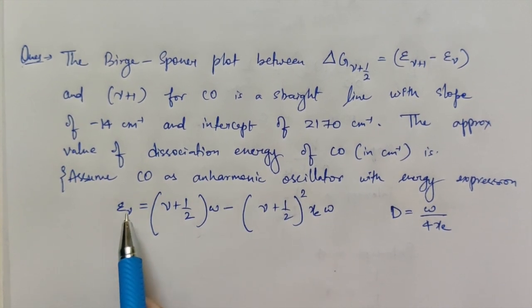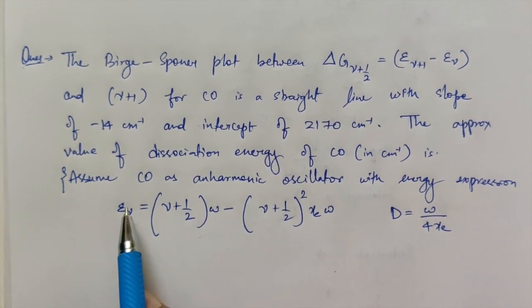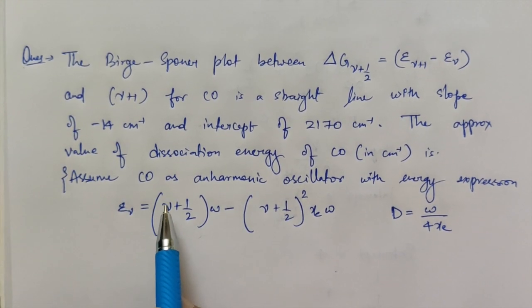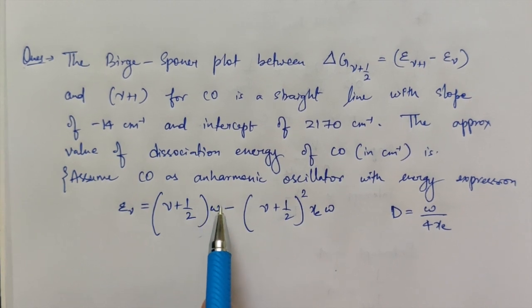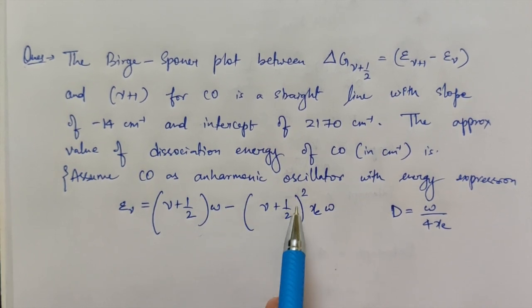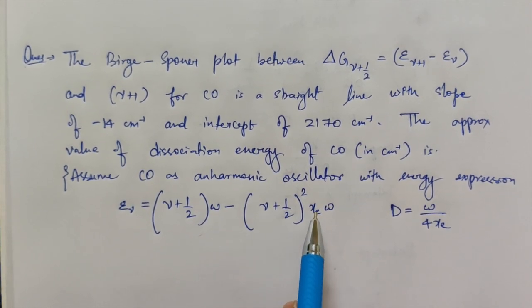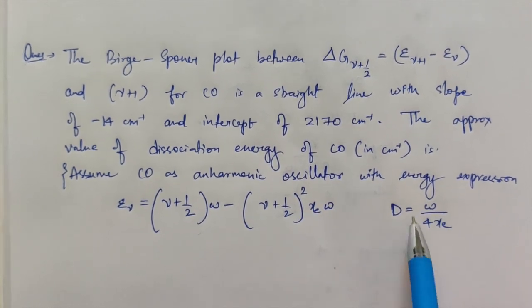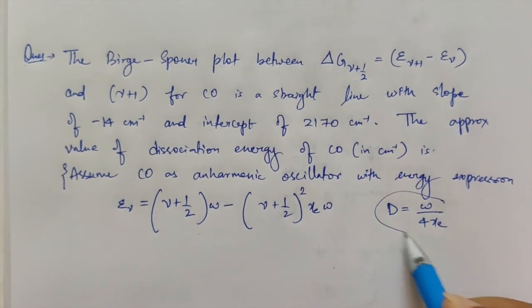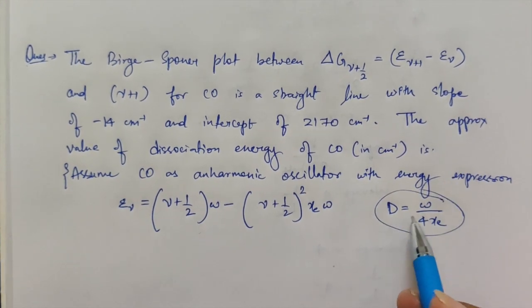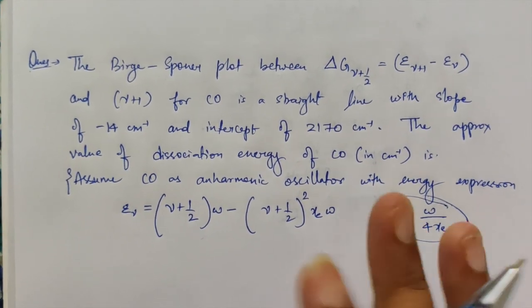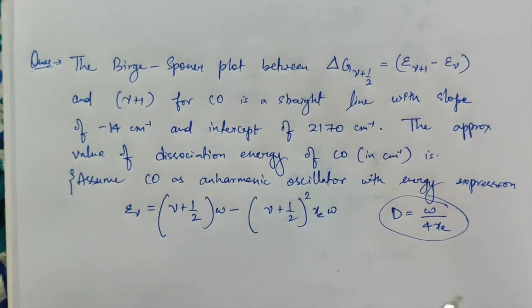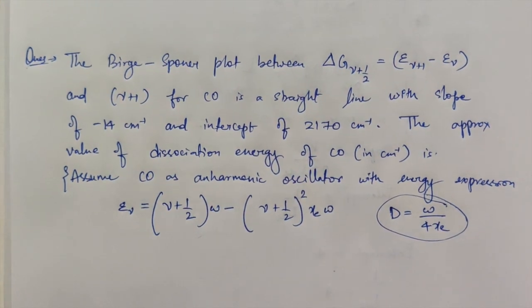All the details are given in the question itself. They say to assume carbon monoxide as an anharmonic oscillator with the energy expression: ε(ν) = (ν + ½)ω − (ν + ½)² Xeω. The dissociation energy formula is also given: D = ω / (4Xe). Now let's try to solve this.